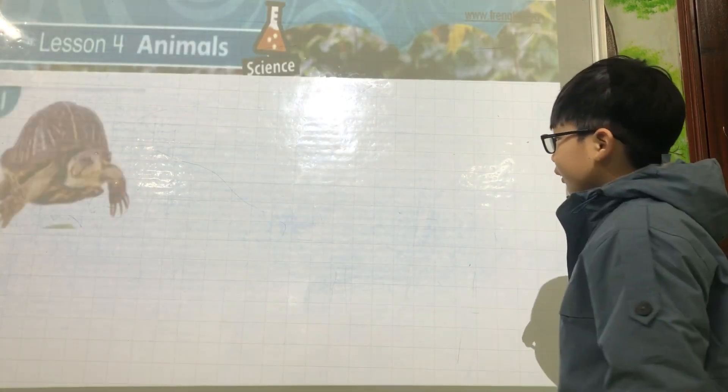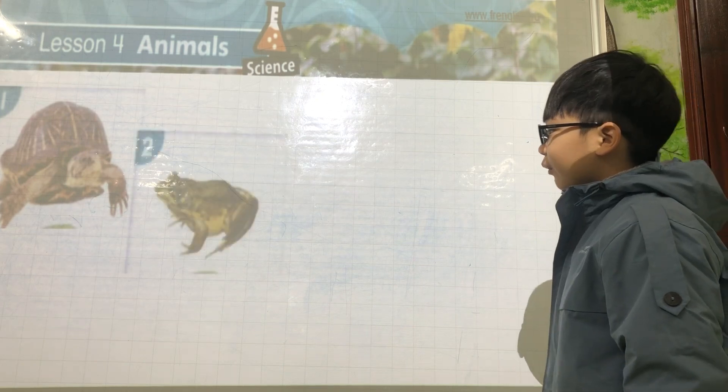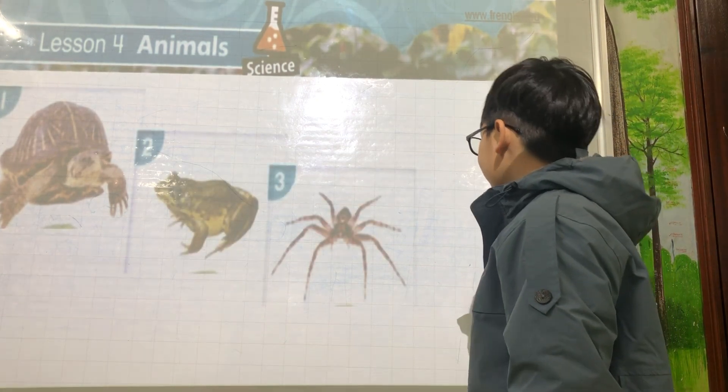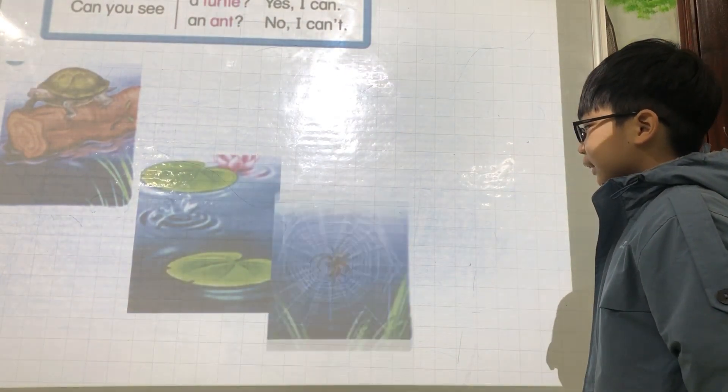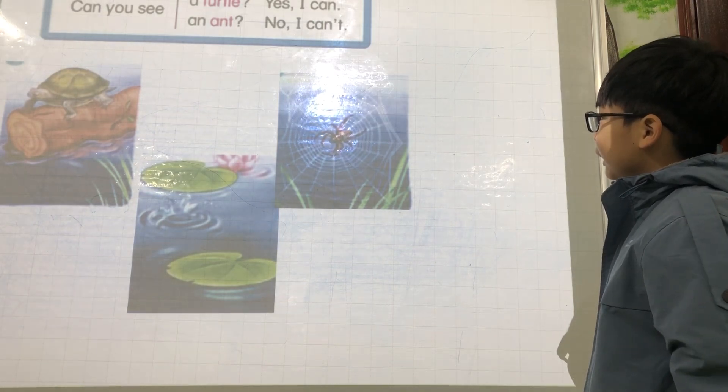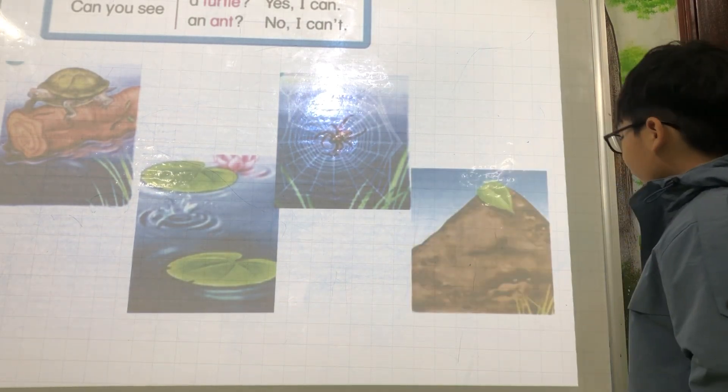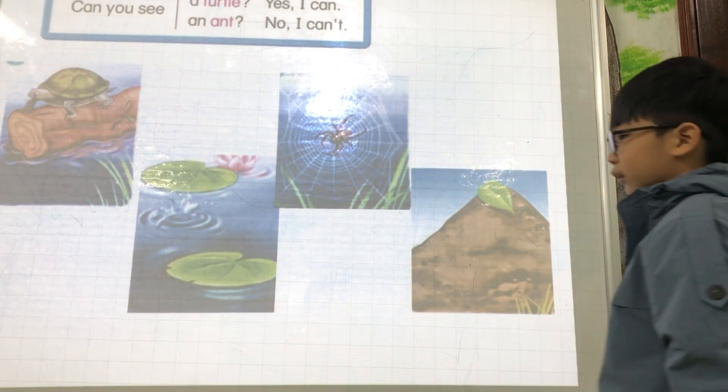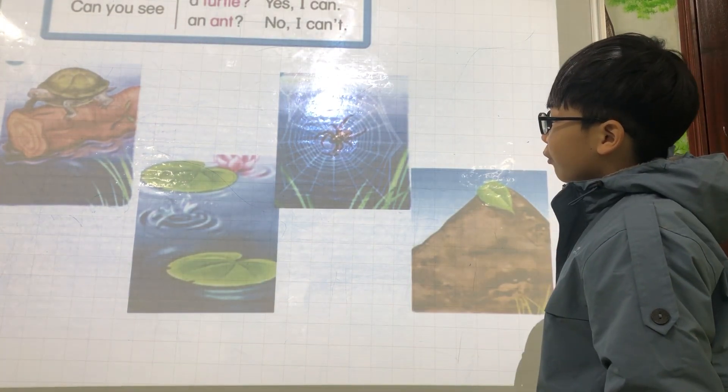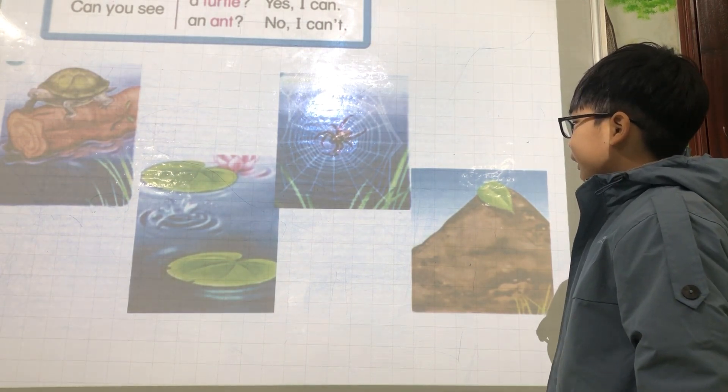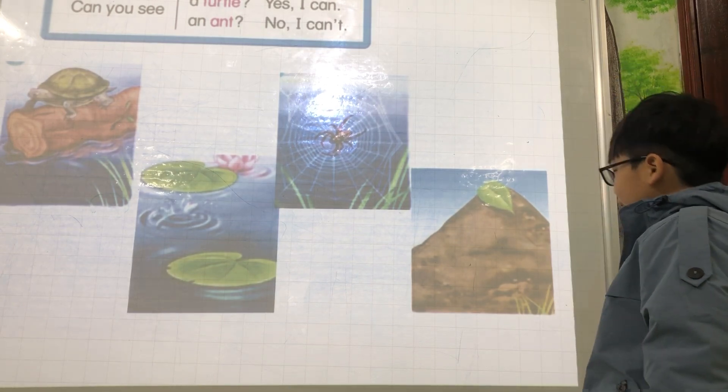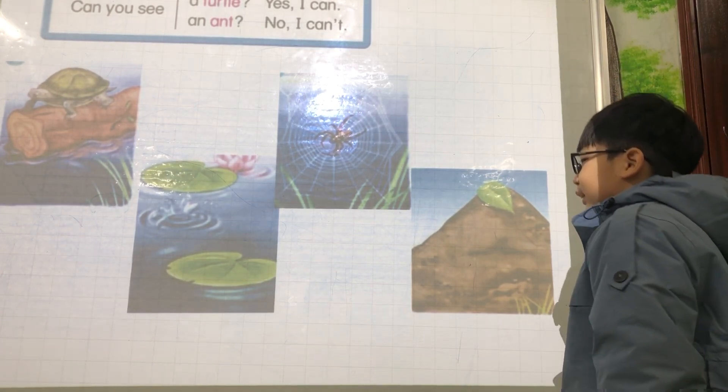Okay, let's talk about animals. Turtle. Frog. Spider. Ant. Okay. Can you see a turtle? Yes, I can. Can you see a frog? No, I can't. Can you see a spider? Yes, I can. Can you see an ant? No, I can't.